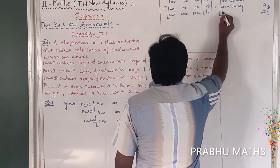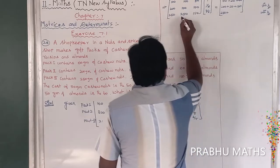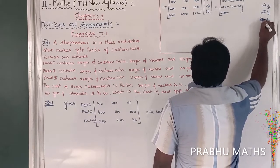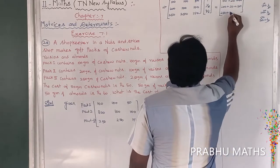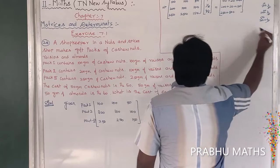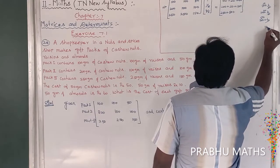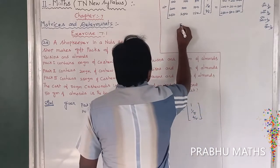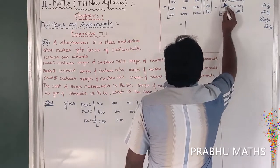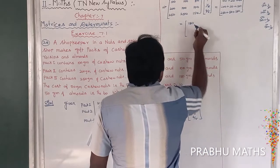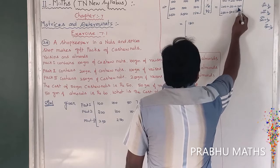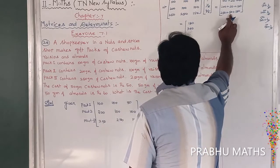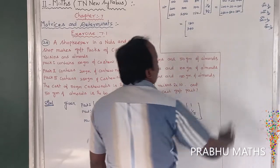For the third packet: 250 into 1 is 250, plus 250 into 1 by 5 is 50, plus 150 into 6 by 5 is 180. So the total for packet 3 is 250 plus 50 plus 180, which equals 480.